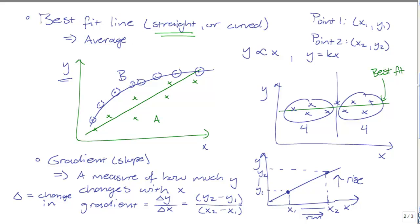The best fit line can be straight or curved usually, but most graphs that you'll plot will be straight line graphs. Once you've plotted your best fit line, you can determine the gradient of the line or the slope of the line. The slope is just a measure of how much the quantity on your y-axis changes with the quantity on your x-axis.